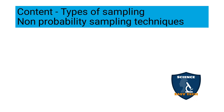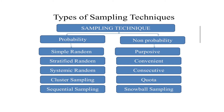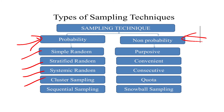Let's move on to the content. Under types of sampling we are going to see in detail about non-probability sampling methods or techniques. Under probability sampling methods you have simple random sampling, stratified random sampling, systematic random sampling, cluster sampling and sequential sampling.